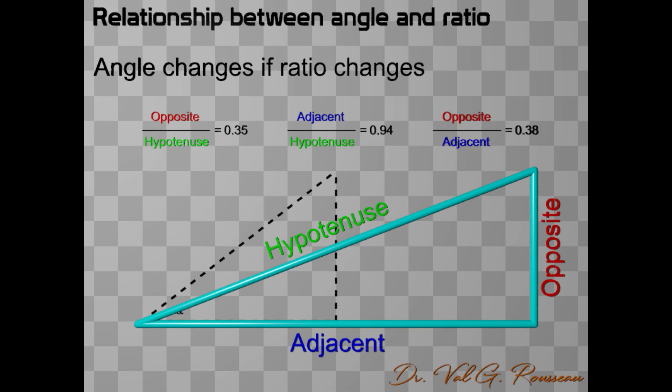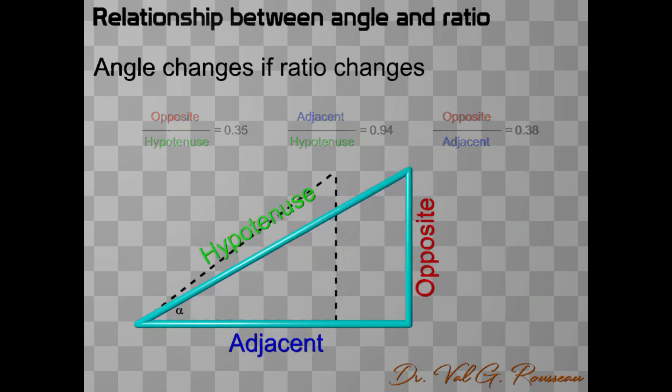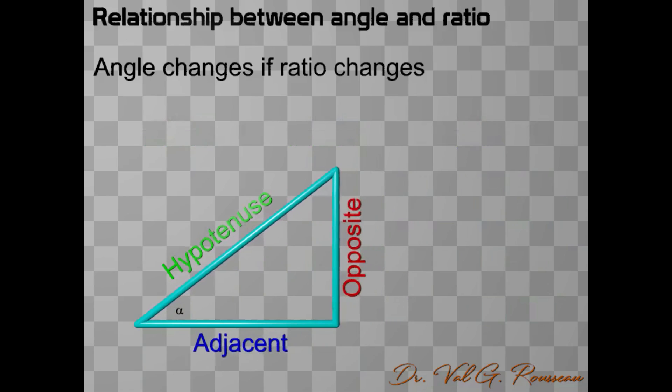From this analysis, we can conclude that the ratios depend on the angle alpha. If we don't change the angle, the ratios don't change either. But if we change the angle, all the three ratios change. Thus, each ratio is a function of the angle.